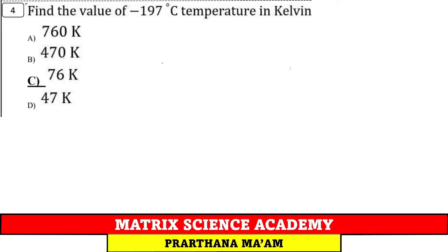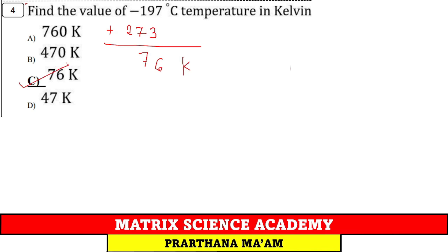Question 4: Convert −197°C to Kelvin. K = °C + 273 = −197 + 273 = 76 K. Option C.